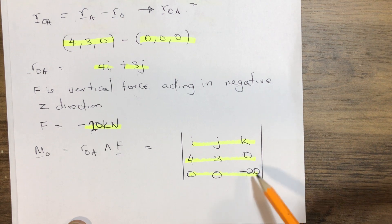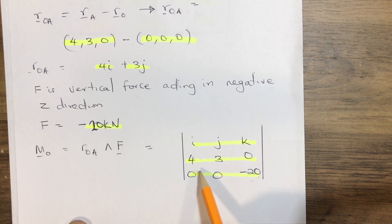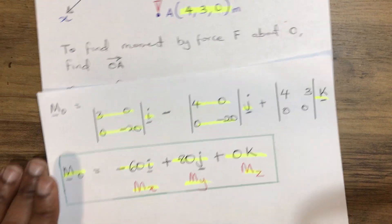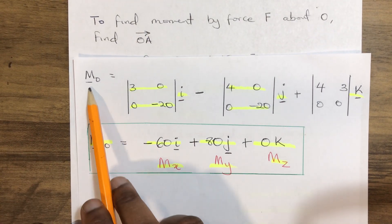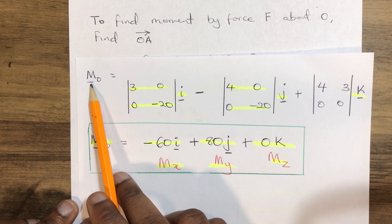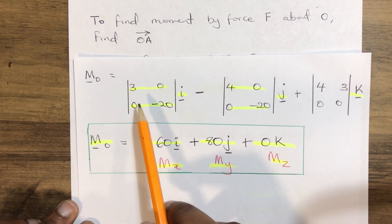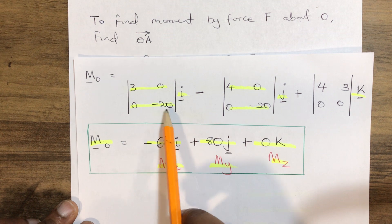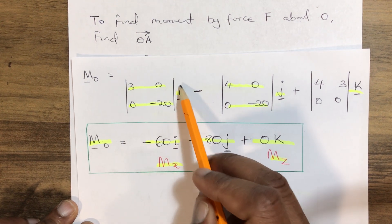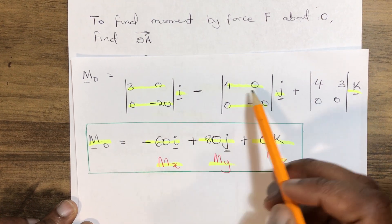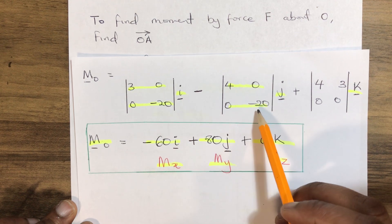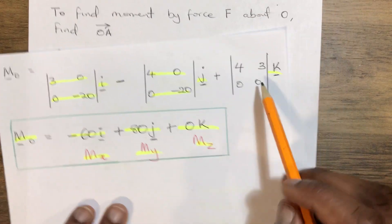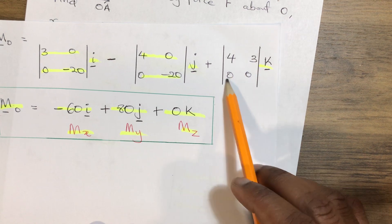To find the moment vector, we expand the determinant. The I component comes from (3)(−20) − (0)(0); the J component from −[(4)(−20) − (0)(0)]; and the K component from (4)(0) − (3)(0).